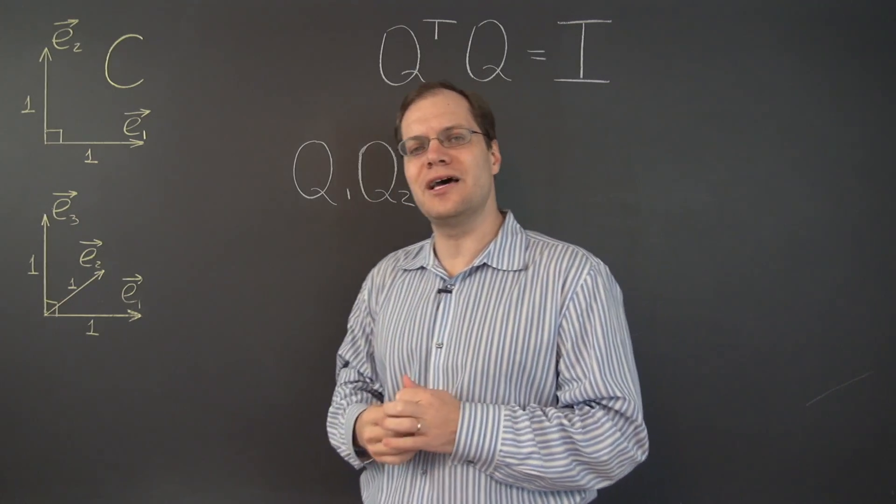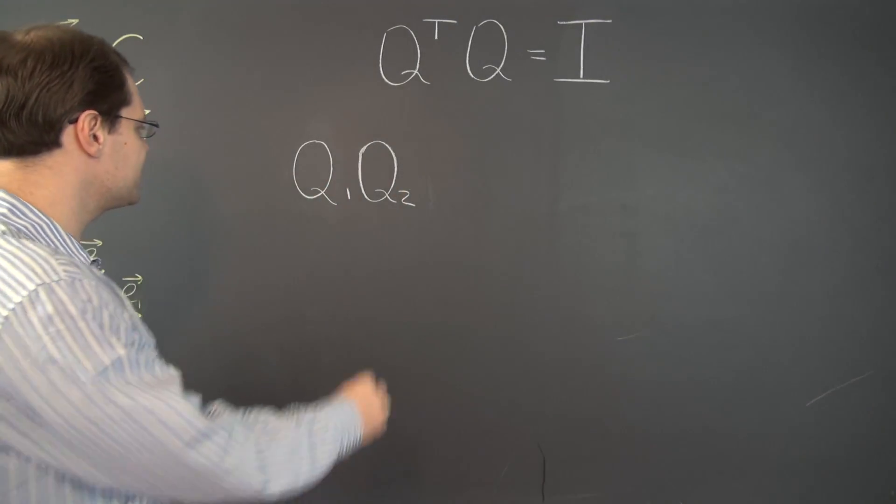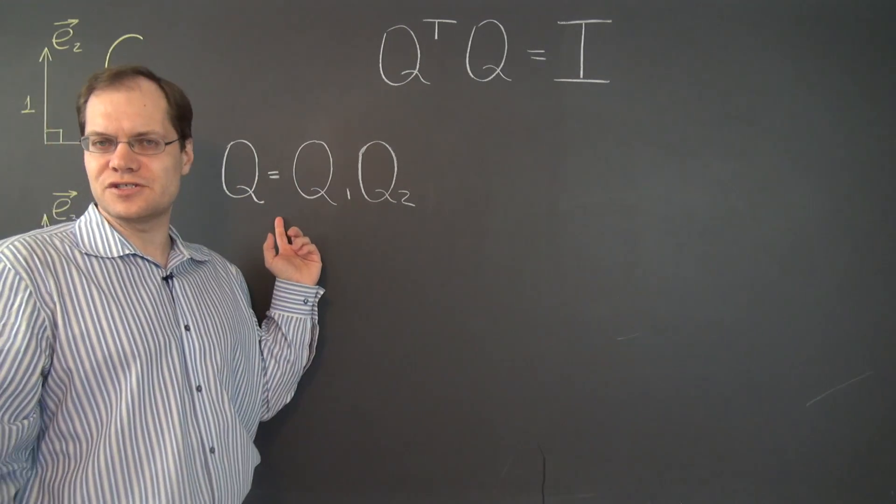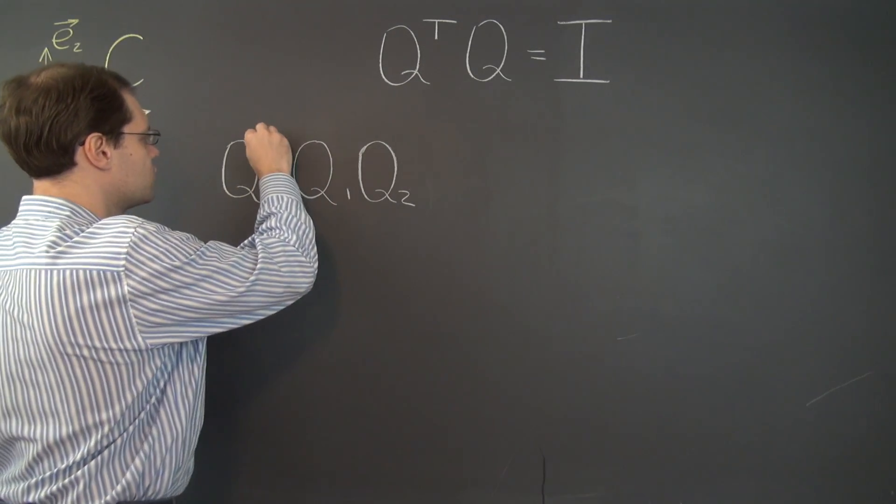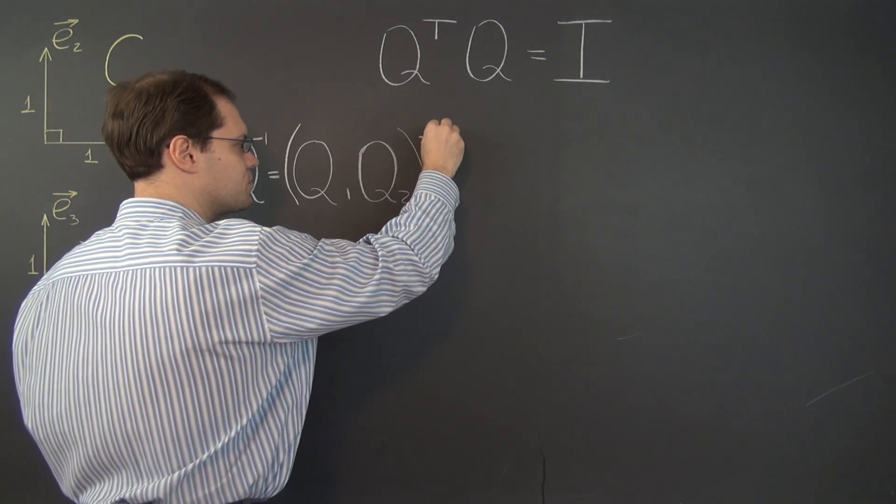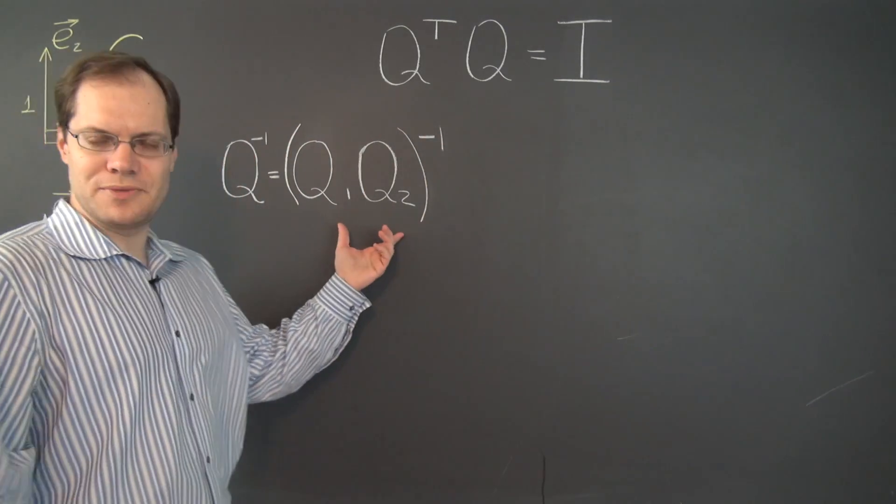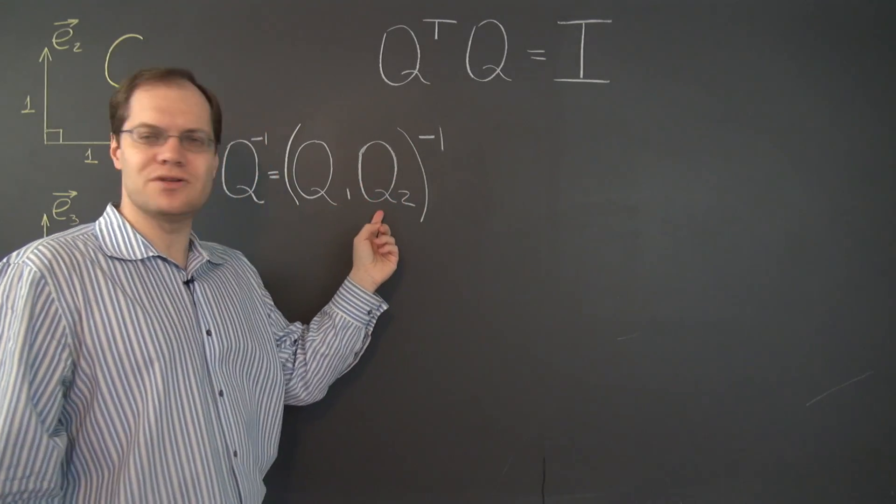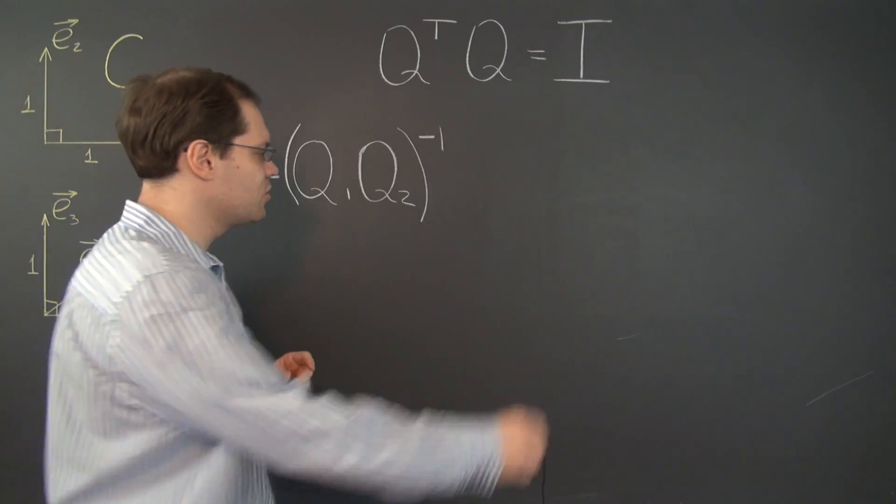So let's go ahead and do that. Let's actually give this matrix a name and call it Q, and we're interested in the inverse of the matrix Q. So we need to say something about the inverse of this product, and of course we remember that the inverse of a product is the product of the individual inverses in the opposite order.